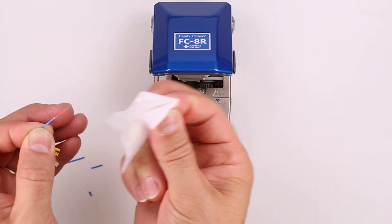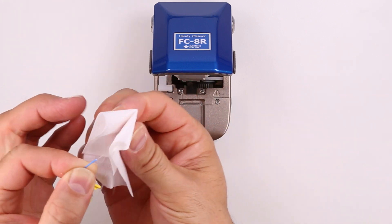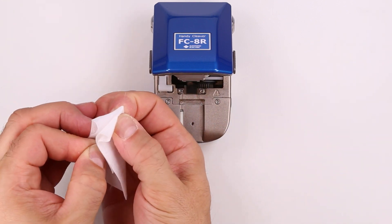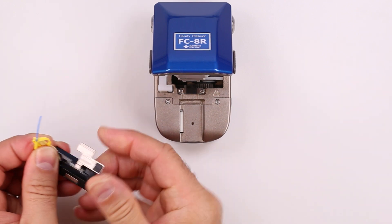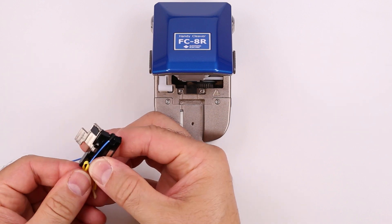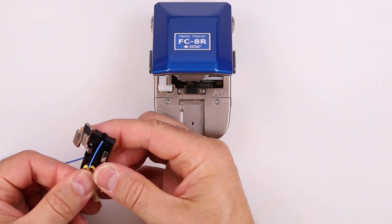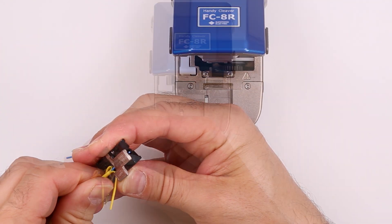Clean the fiber with a lint-free wipe moistened with fiber optic cleaning fluid. Load the fiber into the QuickFuse tight buffer fiber holder. Make sure the buffer is flush with the end of the fiber holder.